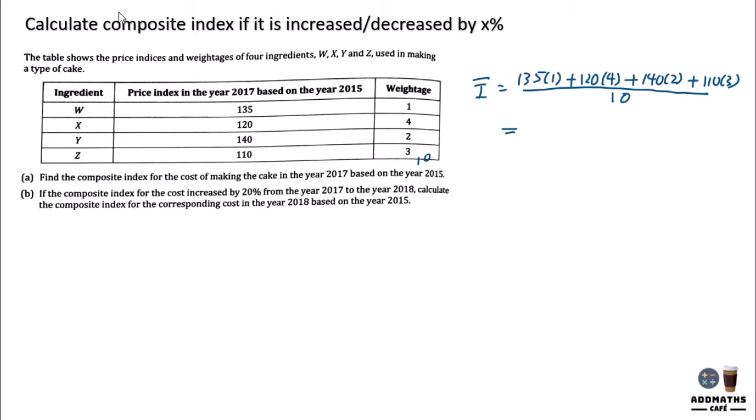By using a calculator, the answer for Part A is 122.5.